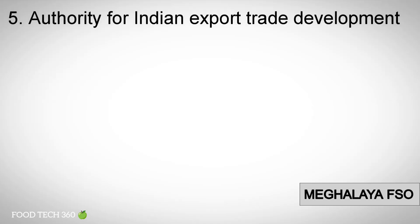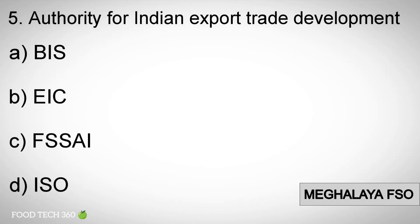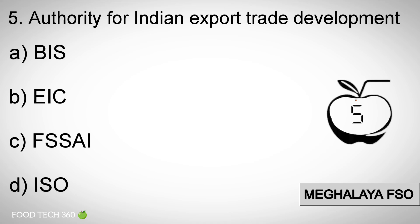Question number 5: Authority for Indian Export Rate Development — options: A) BIS, B) EIC, C) FSSAI, D) ISO.